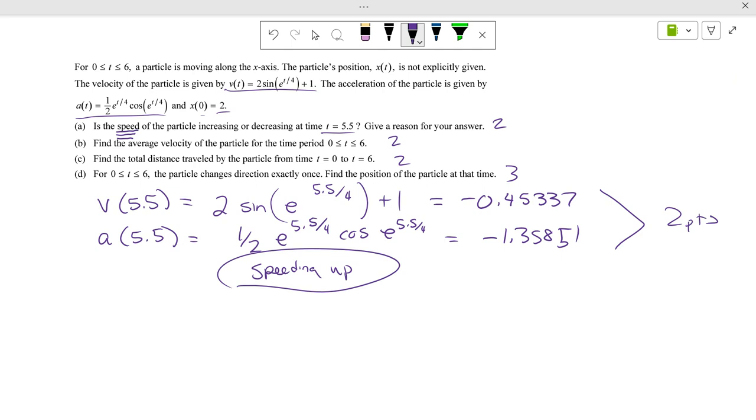That one is worth two points, all or none, to say speeding up. They would like to see you plug in this to this, and if you get it wrong but you show this work, is there a possibility you might get one point? Maybe. Part B, find the average velocity of the particle over that time.